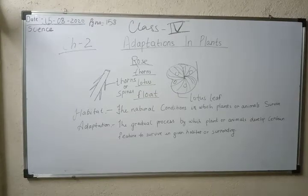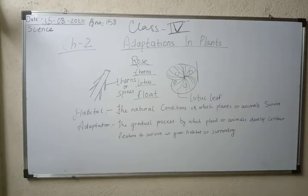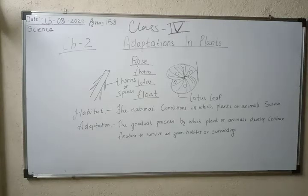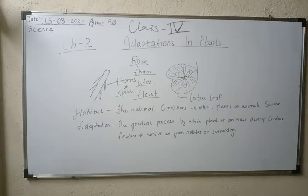If you want to fill those blanks, you can write these words. Now let's read the text: 'We find plants everywhere, on land and even in water. The living conditions vary from place to place. Some places are cold and some are hot. Some places get a lot of rainfall while some other places are dry. All these conditions affect the life and growth of the plant.'